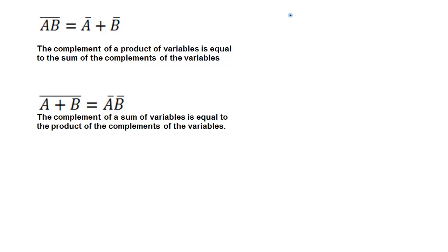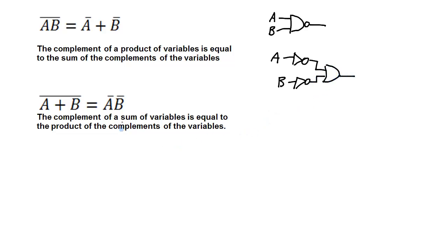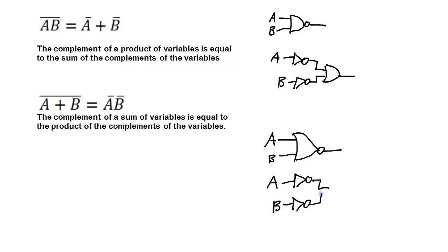As logic gates, this is saying that the NAND gate with A and B applied to the input is the same as A passed through an inverter, B passed through an inverter, and then connected to an AND gate. For the second part of De Morgan's theorem, A and B applied to a NOR gate is the same as A passed through an inverter, B passed through an inverter, and then both connected to an AND gate.